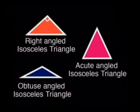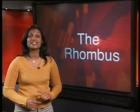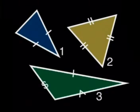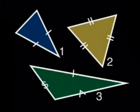Last time, we used a right-angled isosceles triangle to create the square. So this time, let's choose a scalene triangle. Do you remember what scalene means? See if you can identify the scalene triangle. Remember that a scalene triangle is a triangle in which all the sides are of different lengths, and therefore all the angles are of different sizes.